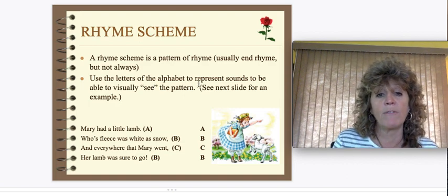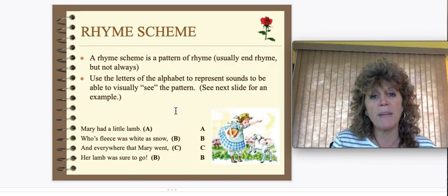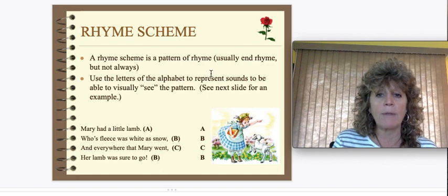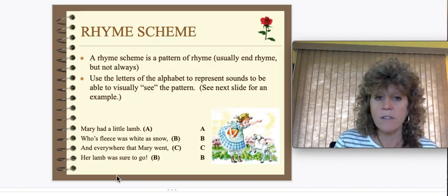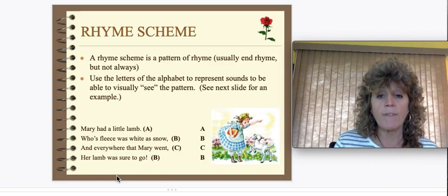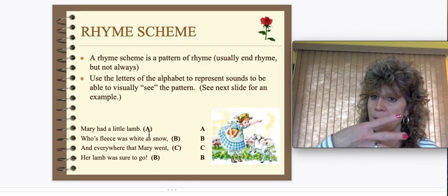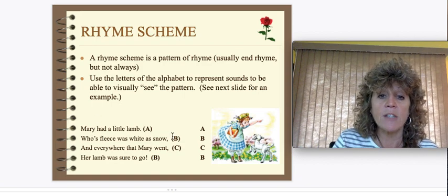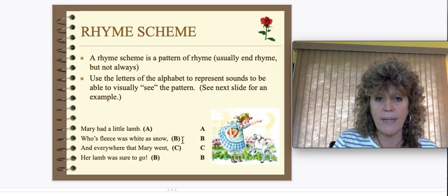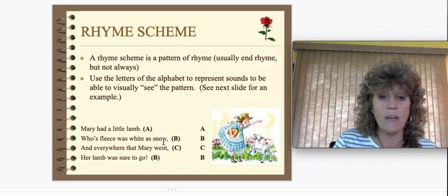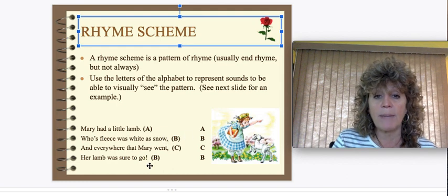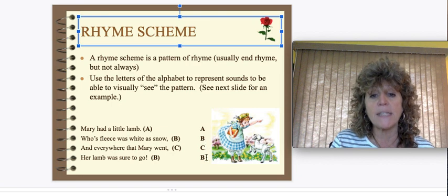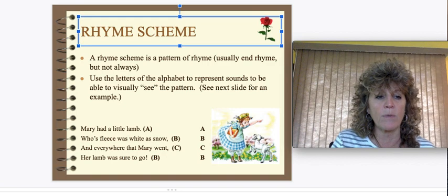A rhyme scheme is the patterning that an author uses to help the meter of the poem. It's a pattern of rhyme, usually at the end, and it uses letters of the alphabet to represent sounds so you can visually see the pattern. For example: "Mary had a little lamb whose fleece was white as snow, and everywhere that Mary went, her lamb was sure to go." The first line ends with lamb — that's A. Snow is B. Went is C — different sound. Go rhymes with snow, so it gets B again. The rhyming pattern is ABCB.